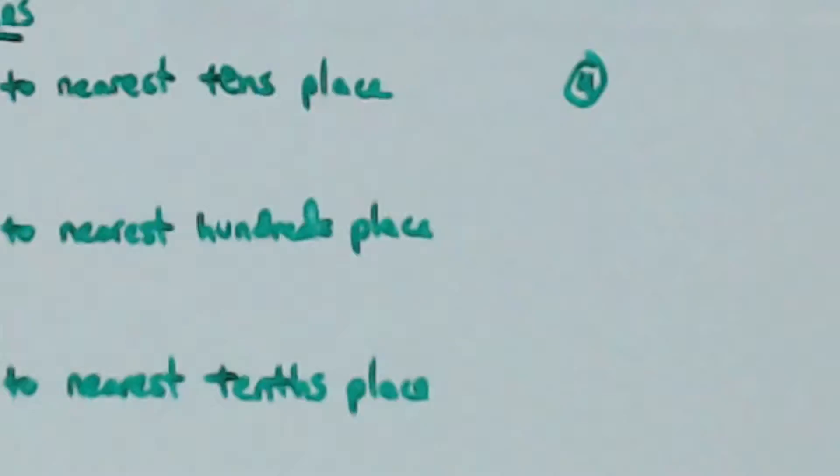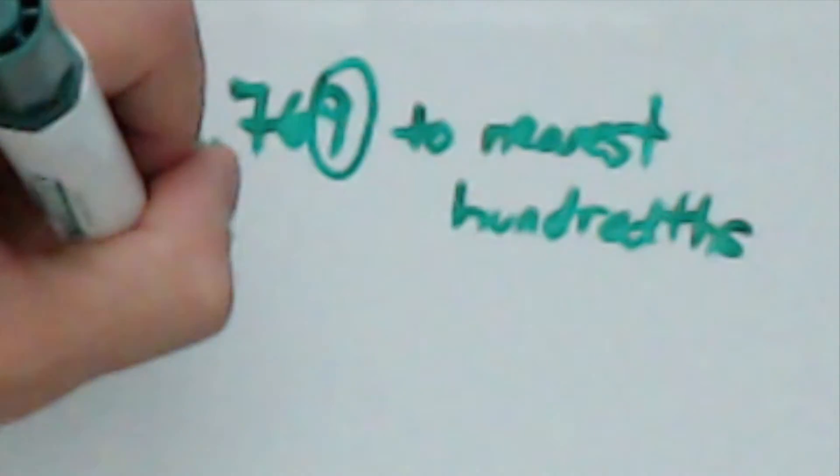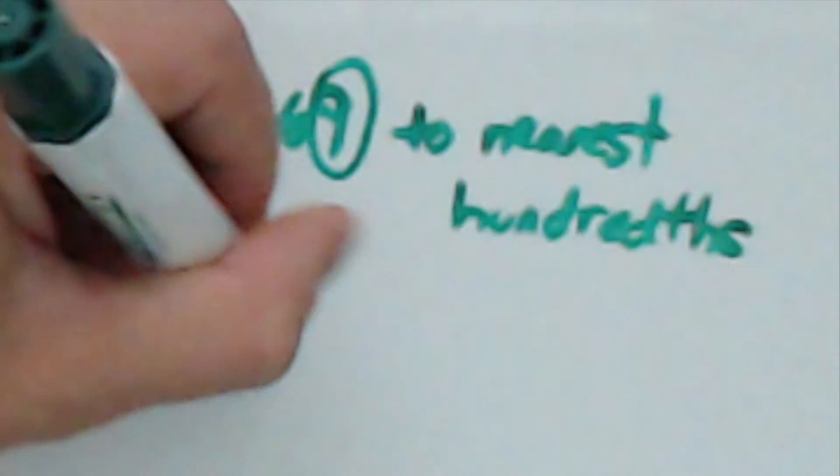Number 4 says to round to the nearest hundreds place. You need to look at the number directly to the right of the hundreds place, which is the thousands place. The number is 9, and since it is greater than 4, the number needs to be rounded up to 12.77.